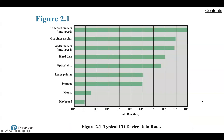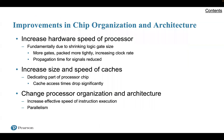We can also increase the interconnect bandwidth between processors and memory by using higher-speed buses in a hierarchy of buses to buffer and structure data flow. Figure 2.1 of the text gives an idea of the different data rates for commonly used components in a computer environment, going all the way from Ethernet down to the keyboard. Ethernet is currently the fastest connection shown; Wi-Fi technologies are trying to match it. Now we're getting into optical fiber, which is pushing the maximum data rate to an even higher level.